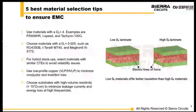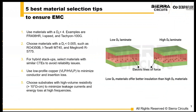In terms of picking materials, there are plenty of different options — we have a material selector on our website. You can pick materials with a Dk of less than four; examples include FR408HR, which is popular in the automotive space, iSpeed, and Tachyon. These are all good choices to help minimize signal loss and maintain impedance consistency. For materials with a Df of less than 0.005, you have options such as Rogers and Megtron.